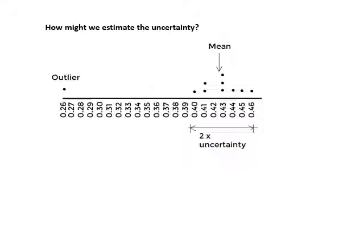How might we estimate the uncertainty? One way we can do it is we can look at the spread of the values. These are all the values of my time - we see where the mean is, and then we say the difference between the highest and lowest values divided by two is the uncertainty. This is called a dot plot. Obviously you need quite a few measurements to do this. Notice that we are ignoring the outlier.